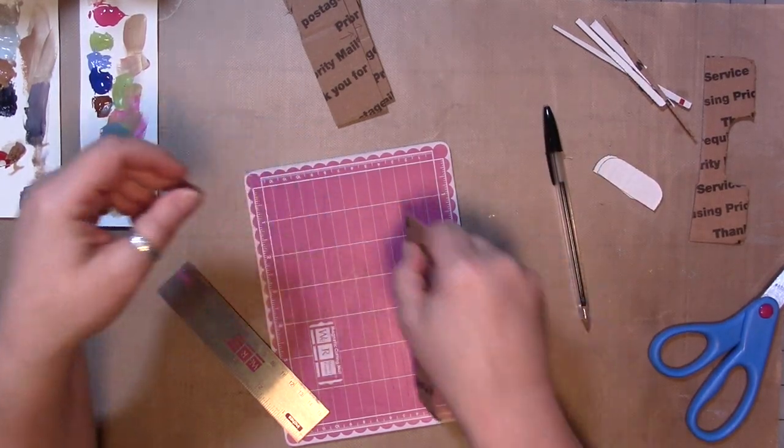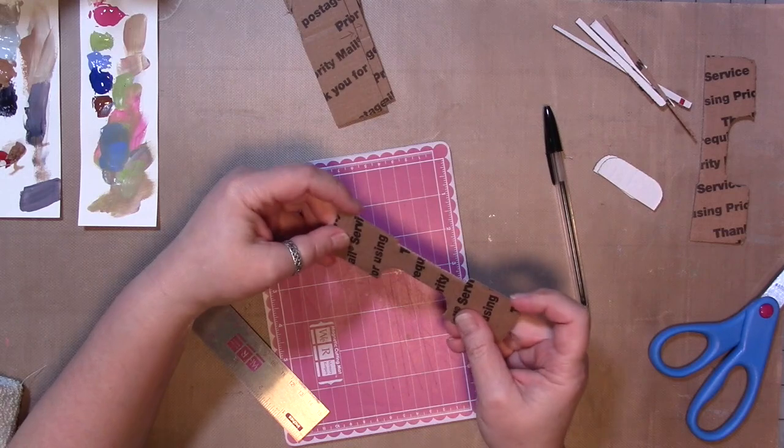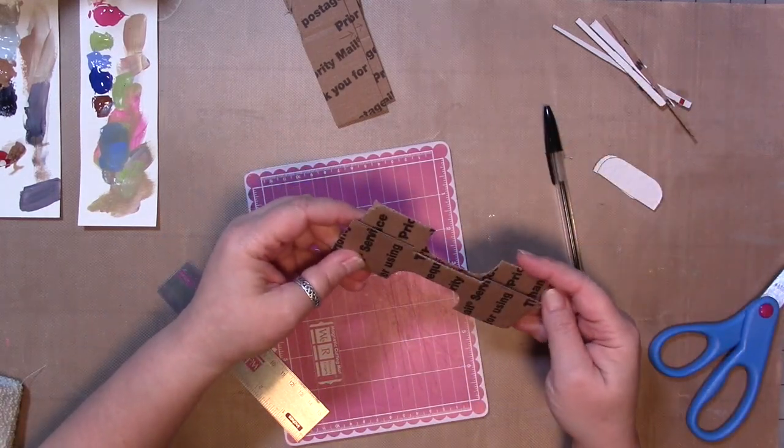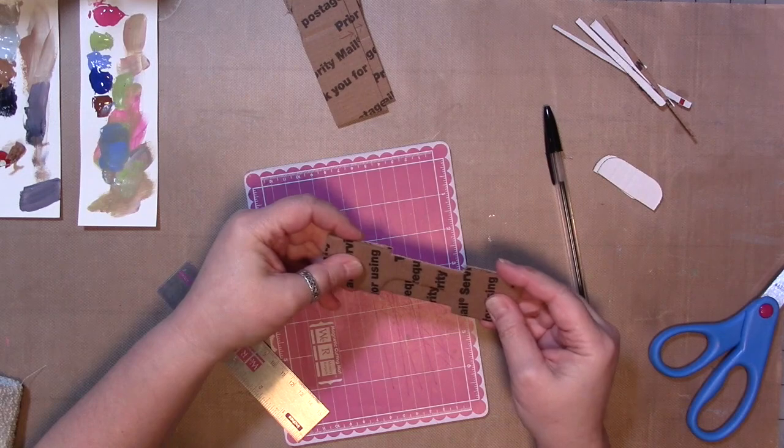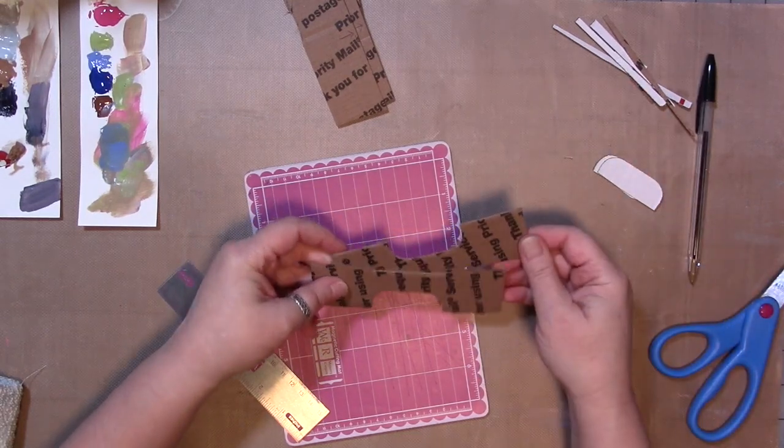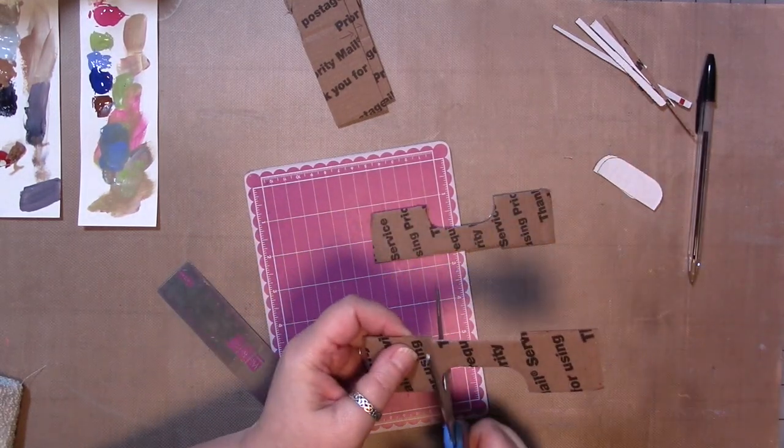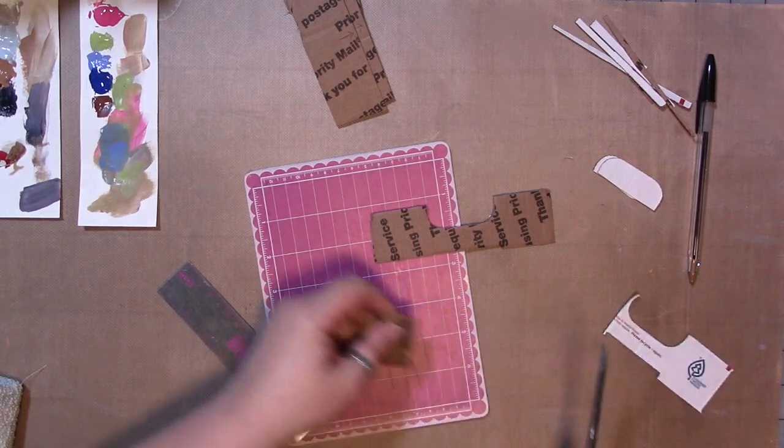This should be pretty straight already because this is from the edge of the box, so it should be factory cut pretty straight. So we're going to go with that. What I'm going to do is cut these parts off.